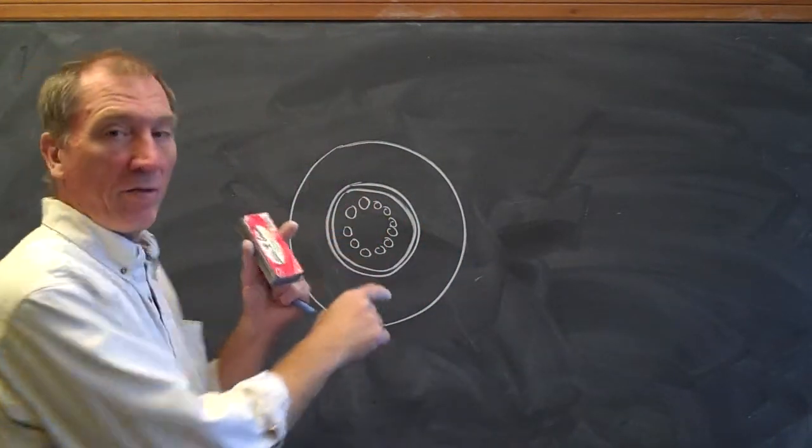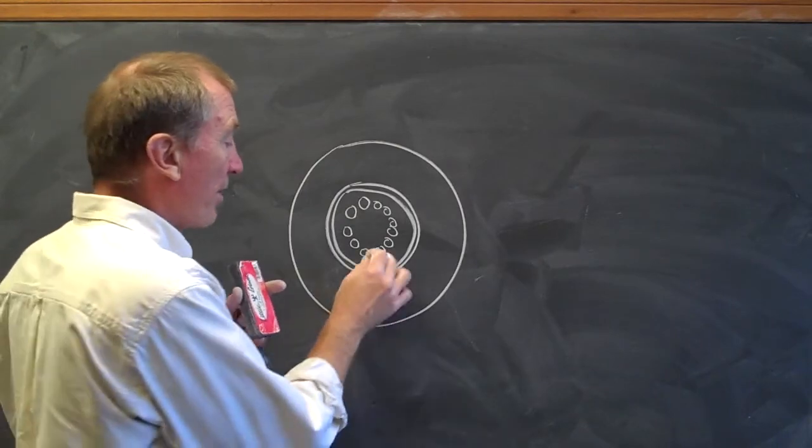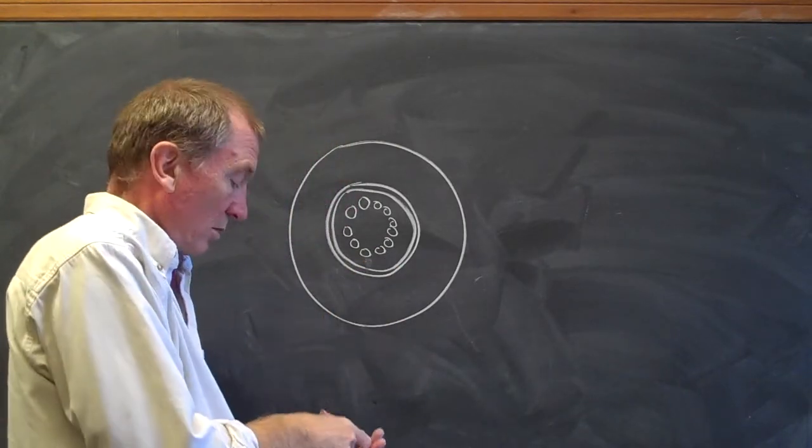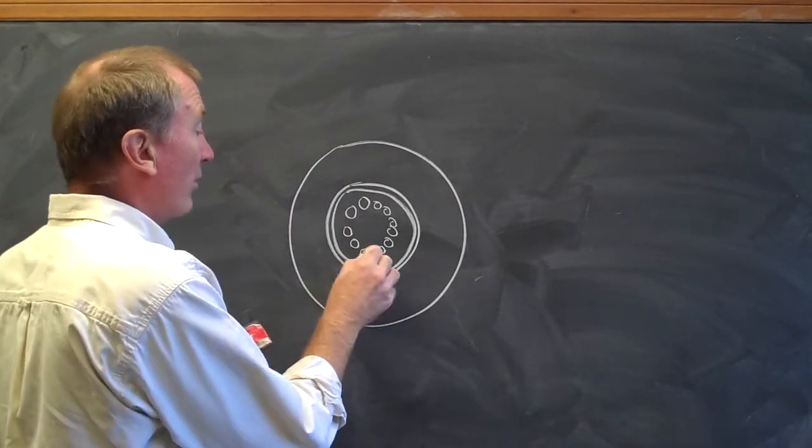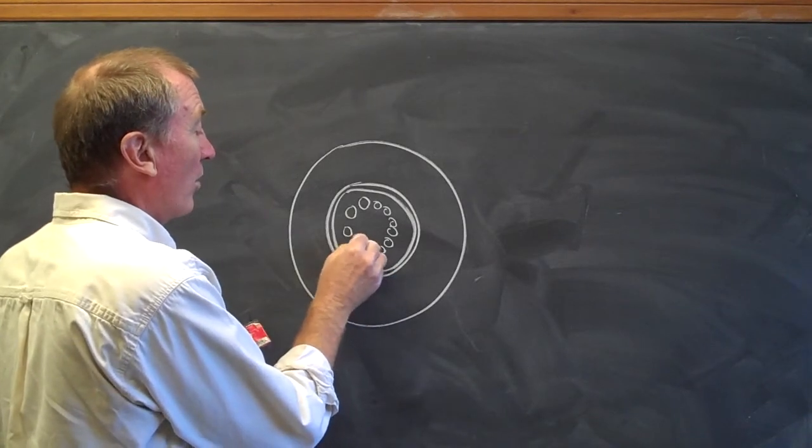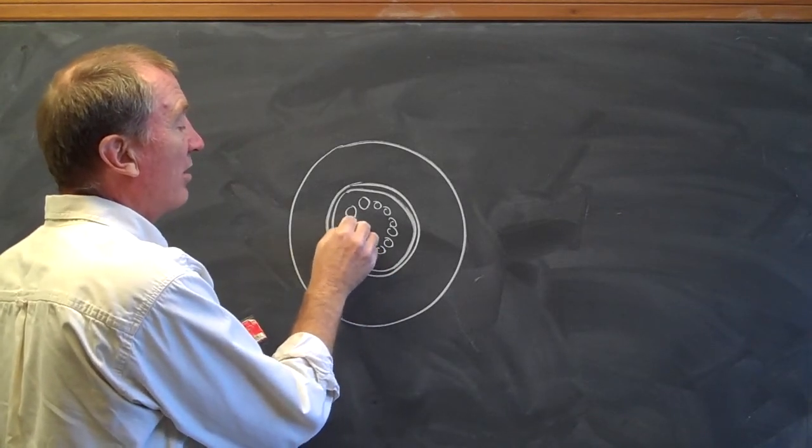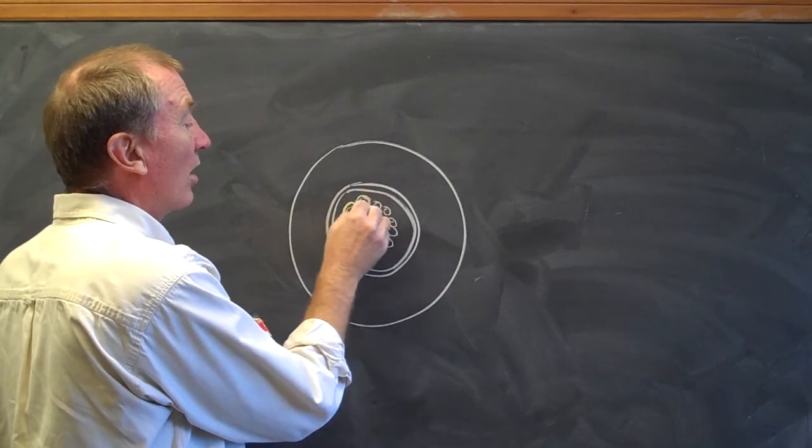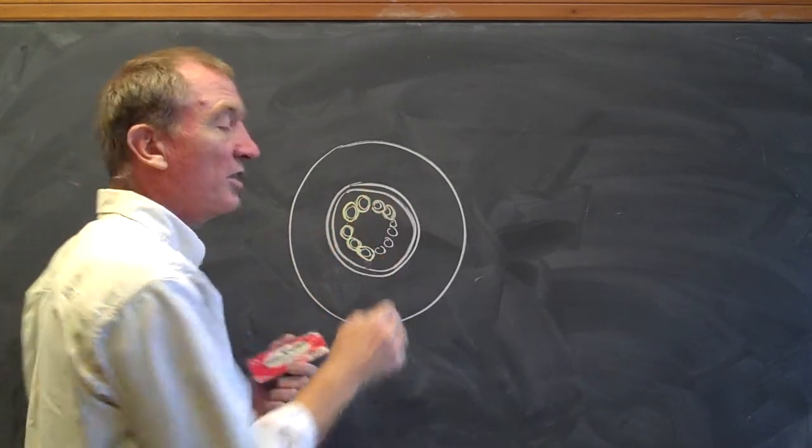And then, the phloem wraps around the outside of the xylem.